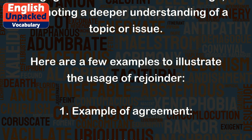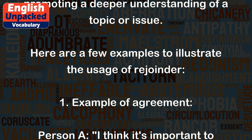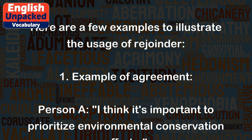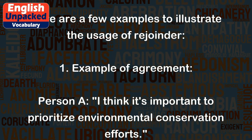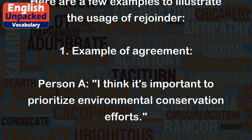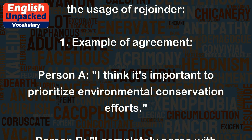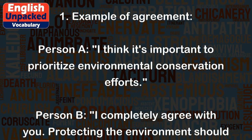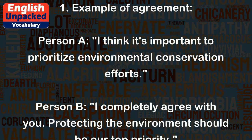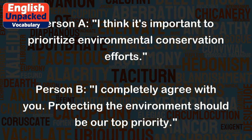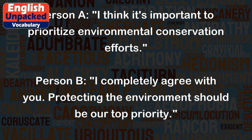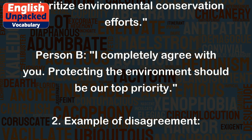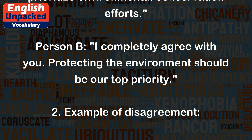Here are a few examples to illustrate the usage of rejoinder. Example 1: Example of agreement. Person A: 'I think it's important to prioritize environmental conservation efforts.' Person B: 'I completely agree with you. Protecting the environment should be our top priority.'